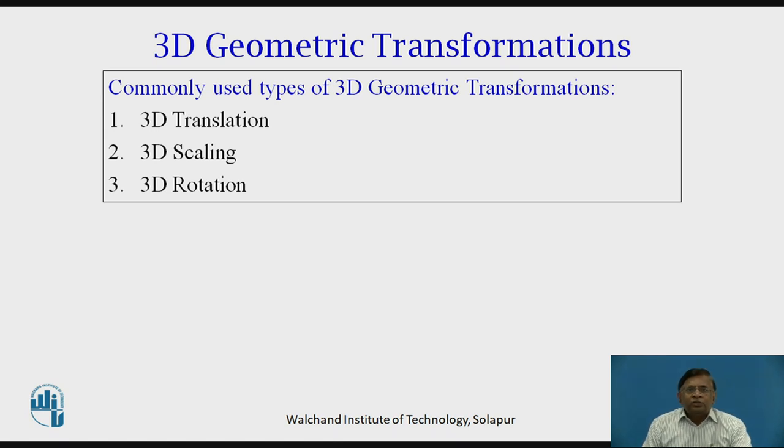In this session, we will be elaborating on 3D translation, 3D scaling and 3D rotation. These are three commonly used geometric transformations. There are other minimal transformations required, but these three are primarily and very widely used. We will be focusing on these three types of transformations in 3D.